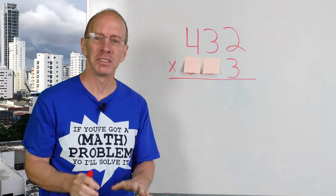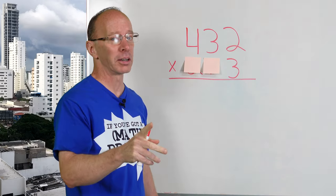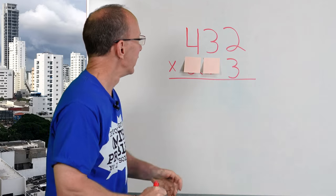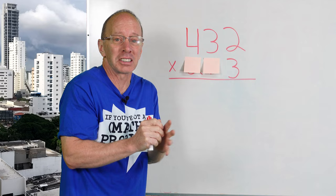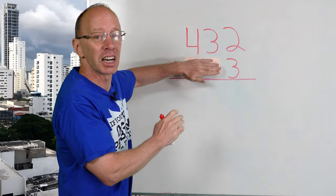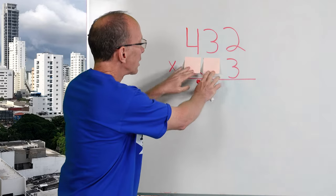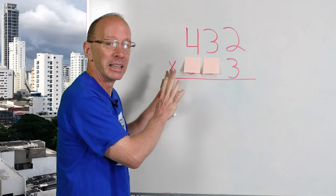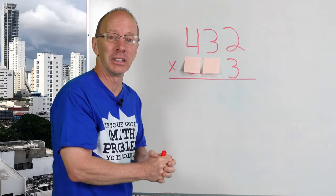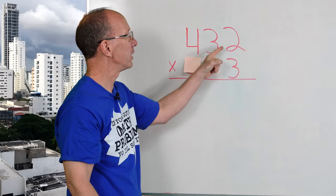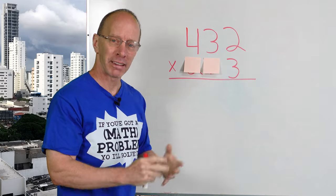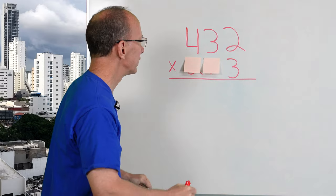Now the problem doesn't look too scary. I don't know about you, but I get a little scared sometimes when I see a spider. And sometimes when I see a big math problem, it's a little scary like a spider. So I'm just covering that up so that way it'll be easy, cheesy, lemon squeezy. So by covering this up, now I have 432 times three. I think I can do that. So let's go ahead and start.